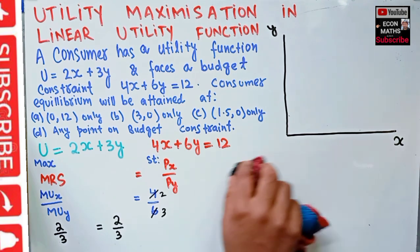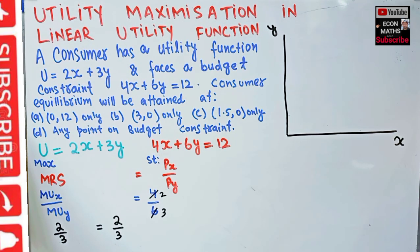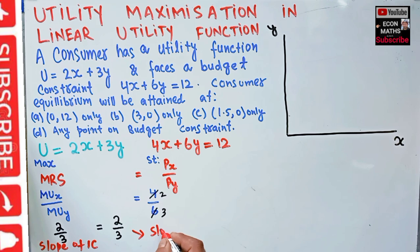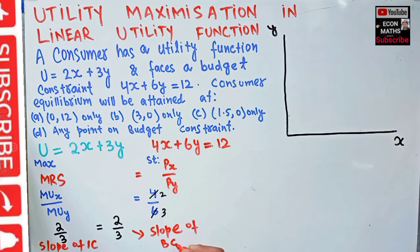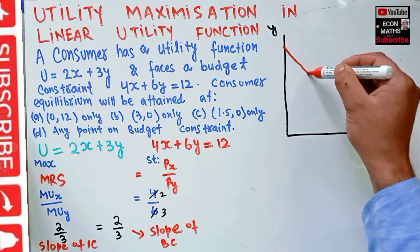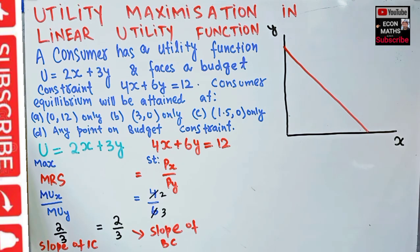What exactly is meant by this? MRS is simply the slope of the indifference curve, and this 2/3 is also the slope of the budget constraint. So the slope of the indifference curve equals the slope of the budget constraint. Let's draw the budget constraint in red color.